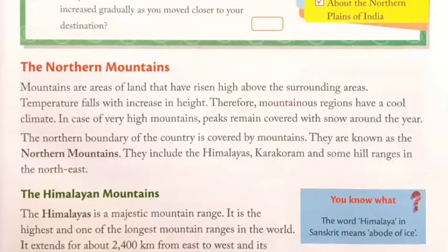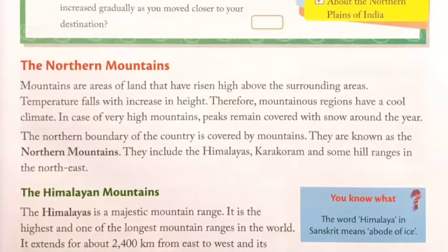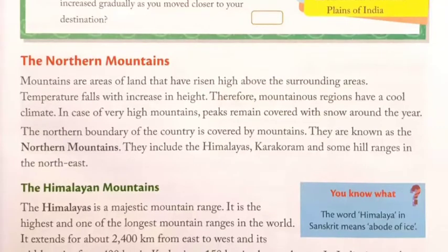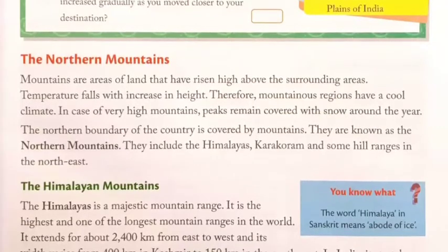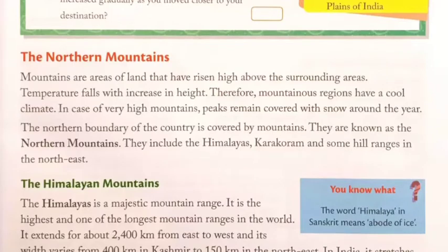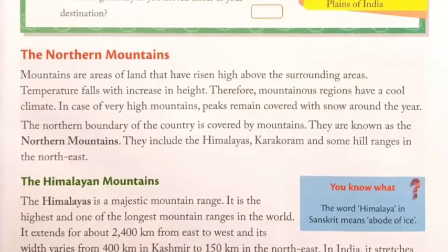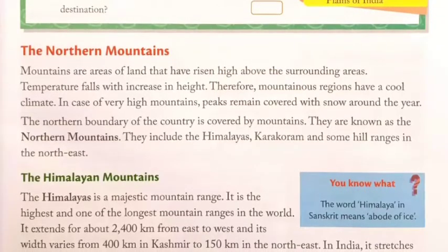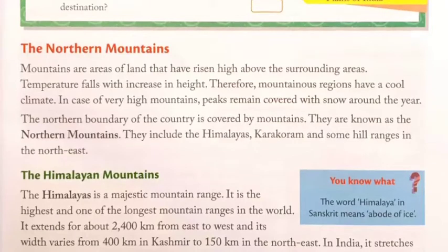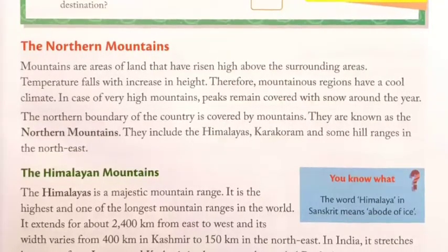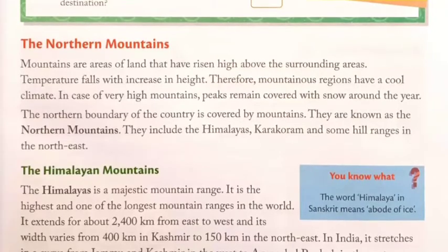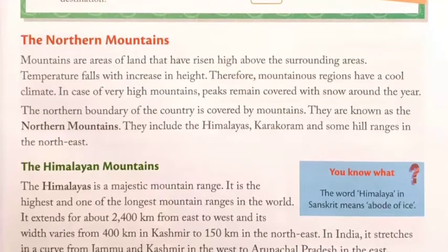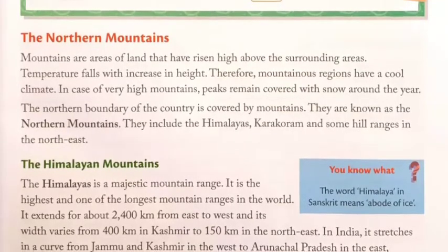The Northern Mountains — mountains are areas of land that rise high above the surrounding areas. Temperature falls with increase in height, therefore mountain regions have a cool climate. In case of very high mountains, peaks remain covered with snow around the year. The northern boundary of the country is covered by mountains, known as the Northern Mountains. They include the Himalayas, Karakoram and some hill ranges in the North East.